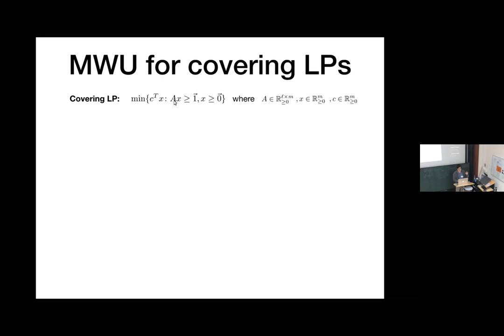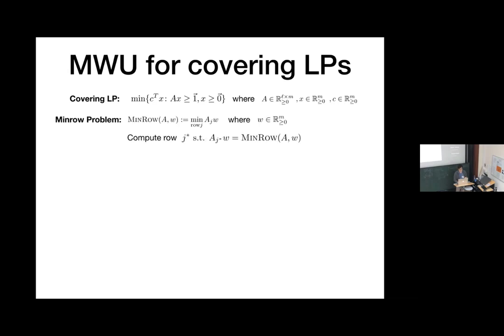Here's the multiplicative weights update for covering LP. Consider a covering LP where the constraint matrix has L rows and M columns — imagine M is the number of edges and L can be exponentially large, so you cannot even read matrix A; it's an implicit matrix. You want the constraint to be covered to at least all ones. The framework reduces solving this to a sequence of oracle problems called the min-row problem: find the row j that minimizes the inner product of row j with the current weights.